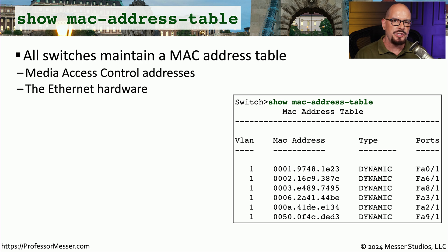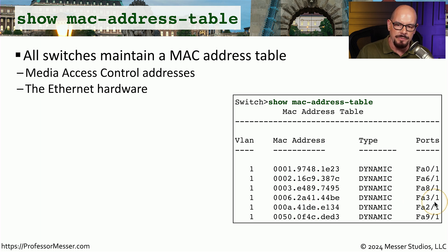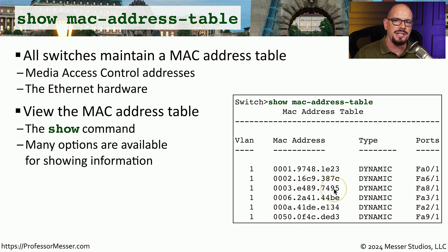In our videos where we talk about the switching process, we talk a lot about the MAC address table. This is the table inside of the switch that has a list of all of the MAC addresses it has learned, and it knows which ports that it learned that MAC address on. When the switch needs to make a decision about where certain traffic should be sent, it can reference that MAC address in the table, identify the port, and send that traffic directly out that port. On many manufacturers' equipment, there is a show command that provides this view. This is a Cisco switch, and I use the show MAC address table command to list out all of the MAC addresses in the MAC address table.